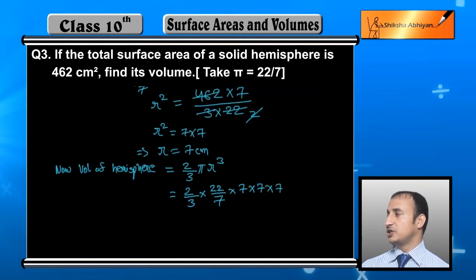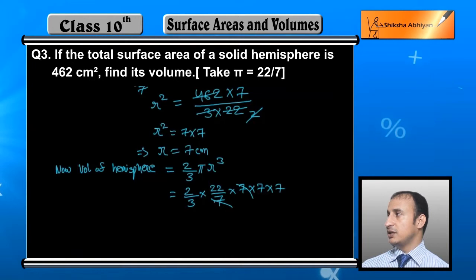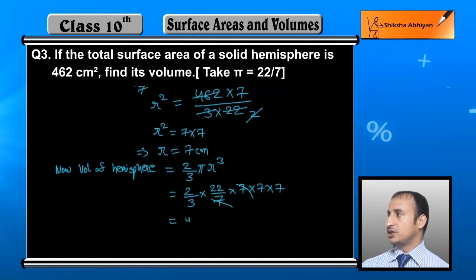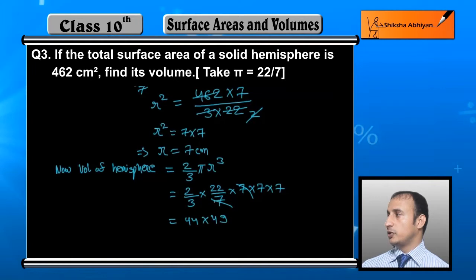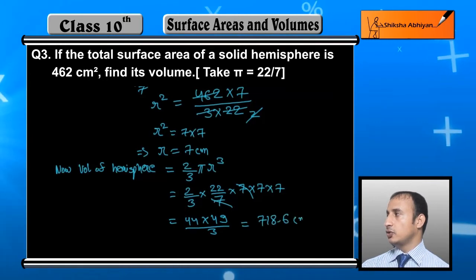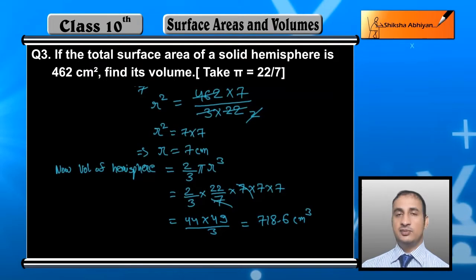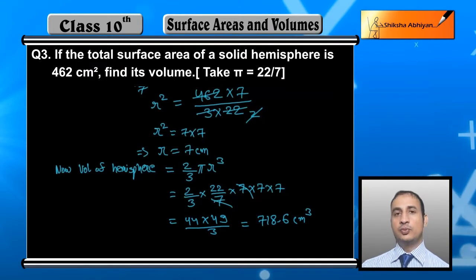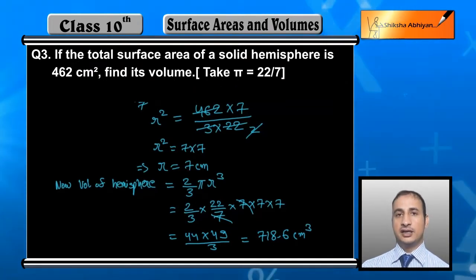We have 7 × 7 × 7 as the cube. The 7 in the denominator cancels with one 7, leaving 2 × 22 × 7 × 7 / 3, which gives 44 × 49 / 3. Solving this, the volume comes out to approximately 718.6 centimeter cube.